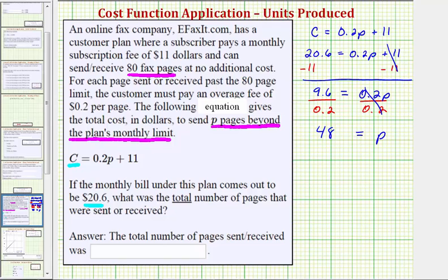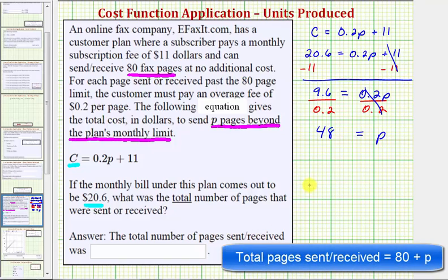So this does not mean that 48 pages were sent and received. That means 48 pages beyond the 80 page limit were sent and received. So 80 plus 48 is equal to 128, so a total of 128 pages were sent and received.